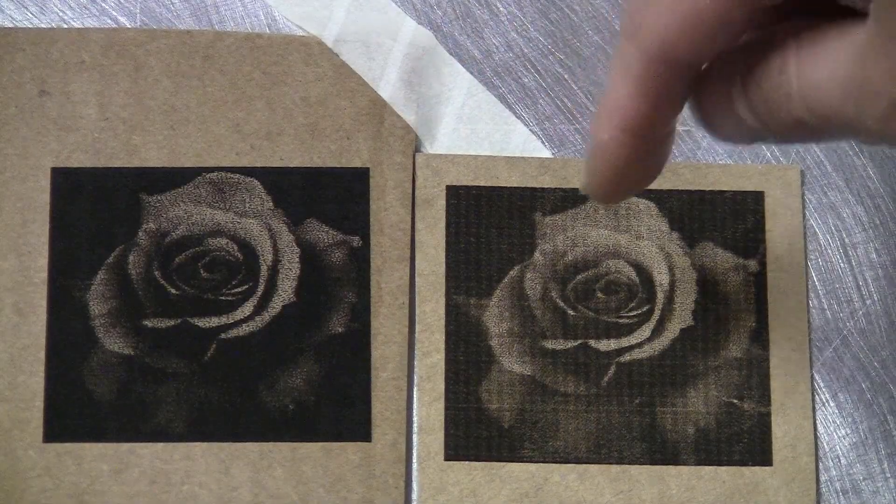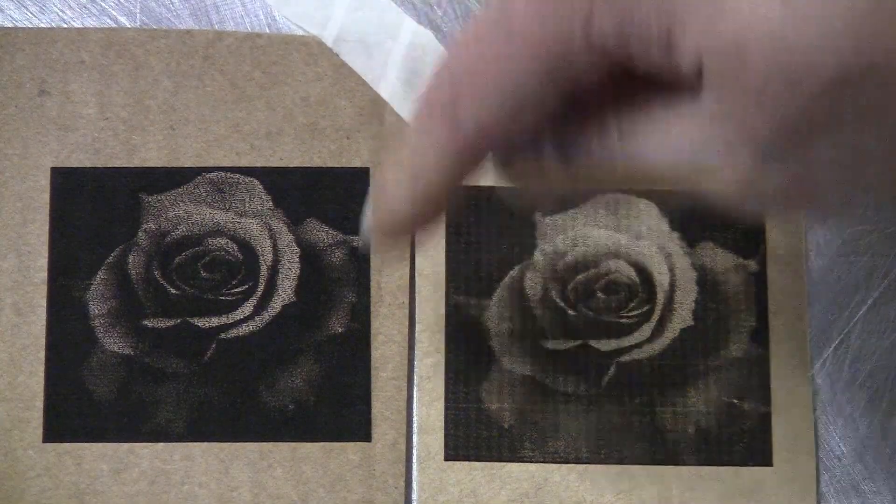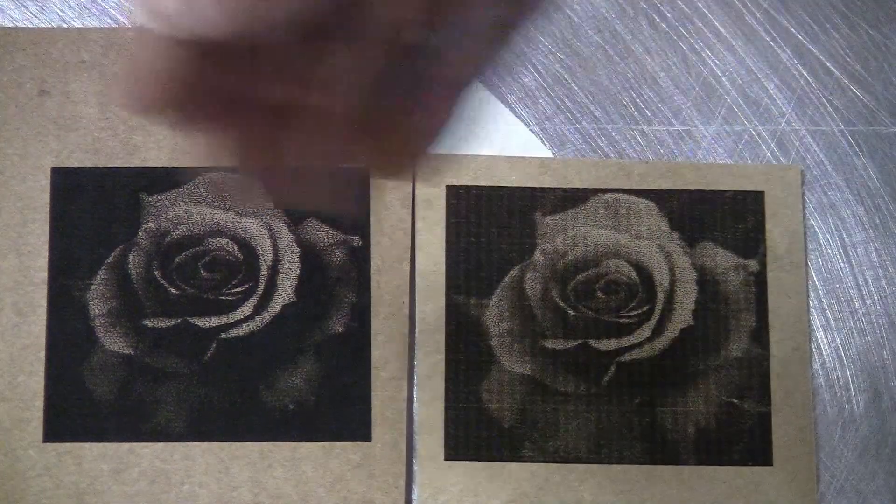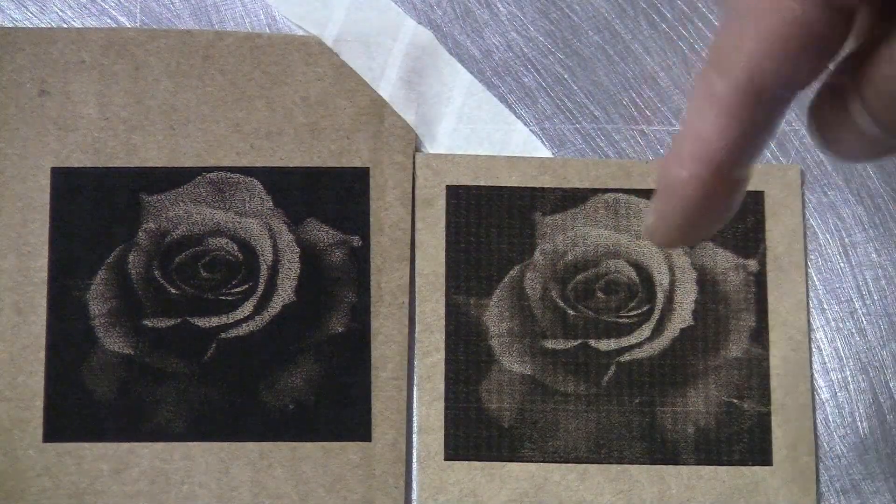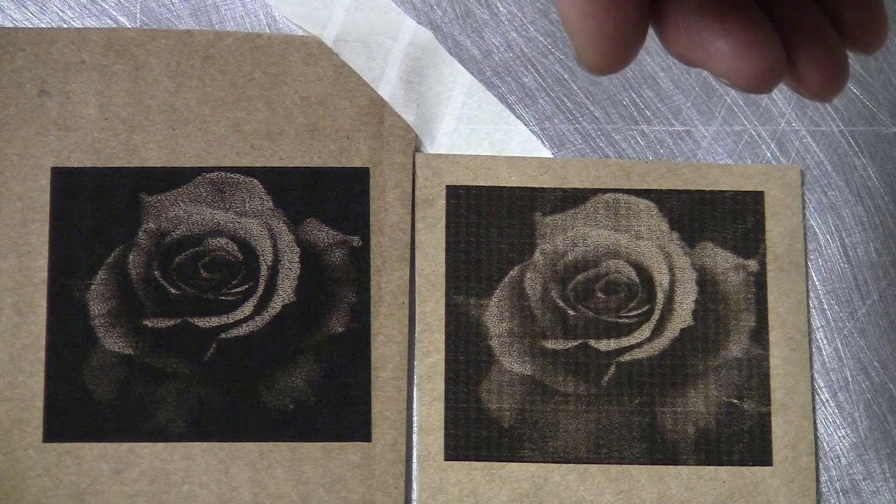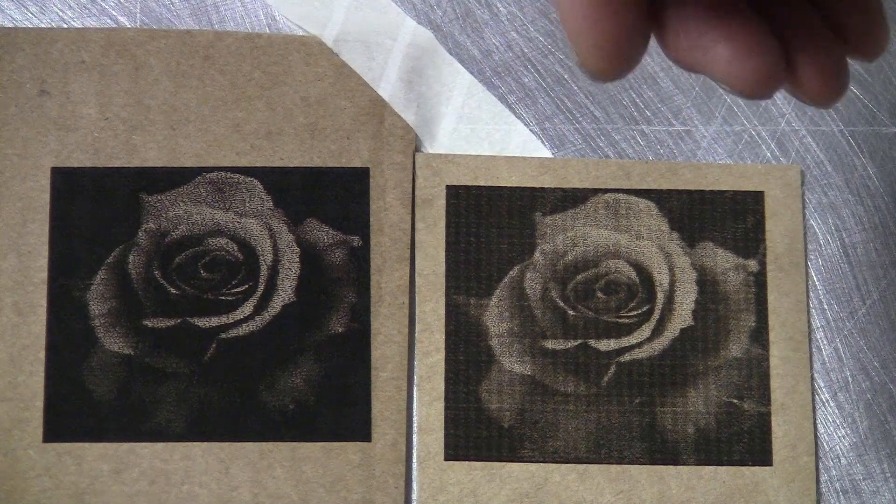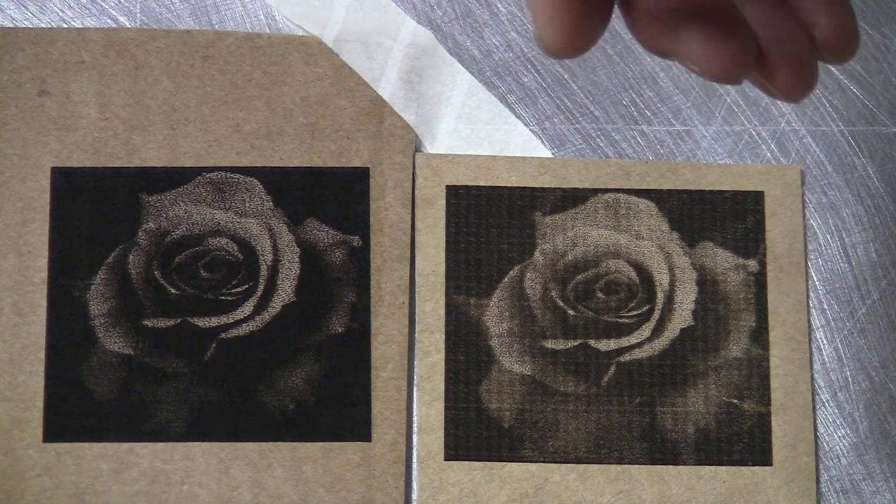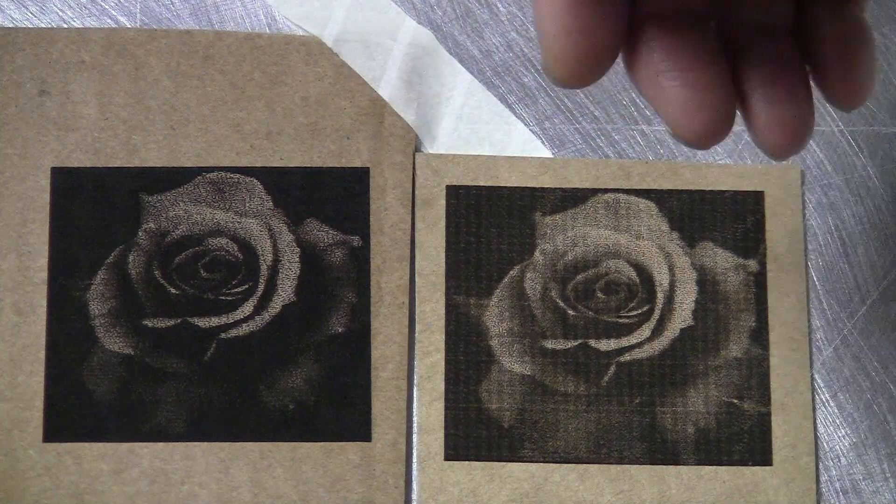As you can see the difference here. This is a new one, you don't see any type of line like vertical and horizontal. This one you can see plenty. So for a cheap laser engraver, probably the traditional way to install the belt, just have the belt wrapped around the pulley is the way to go.